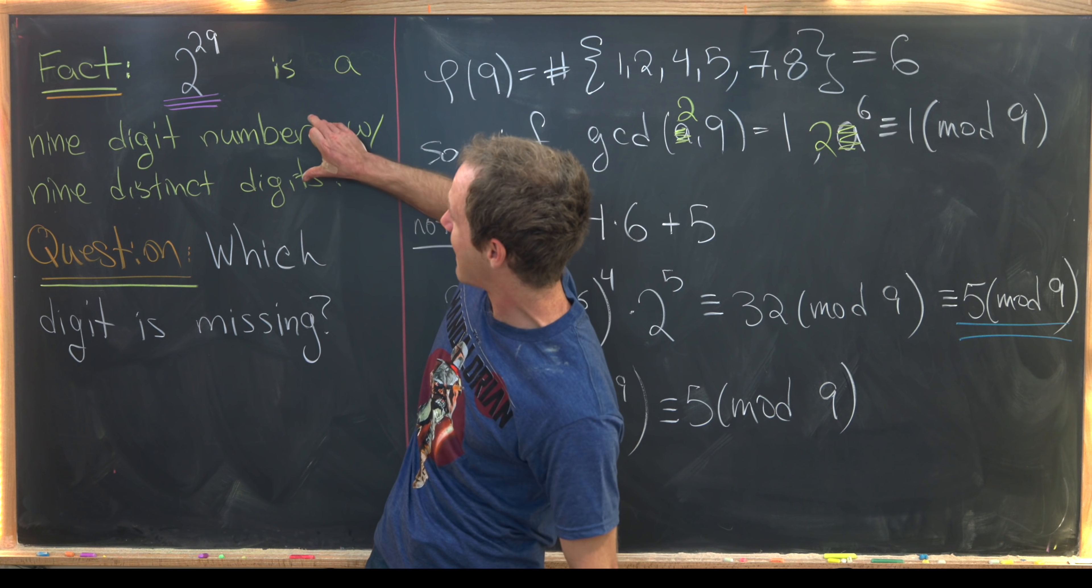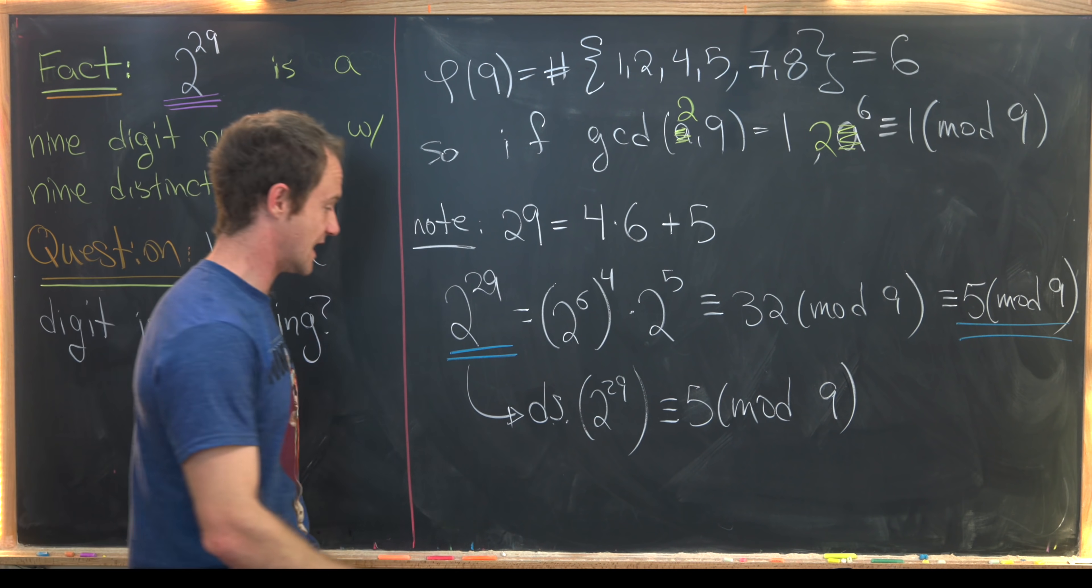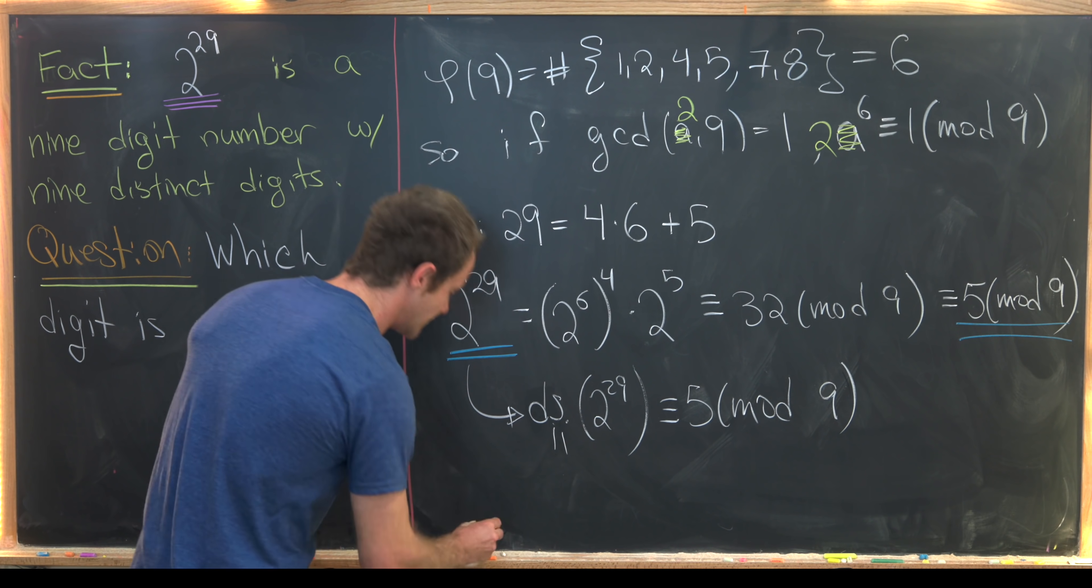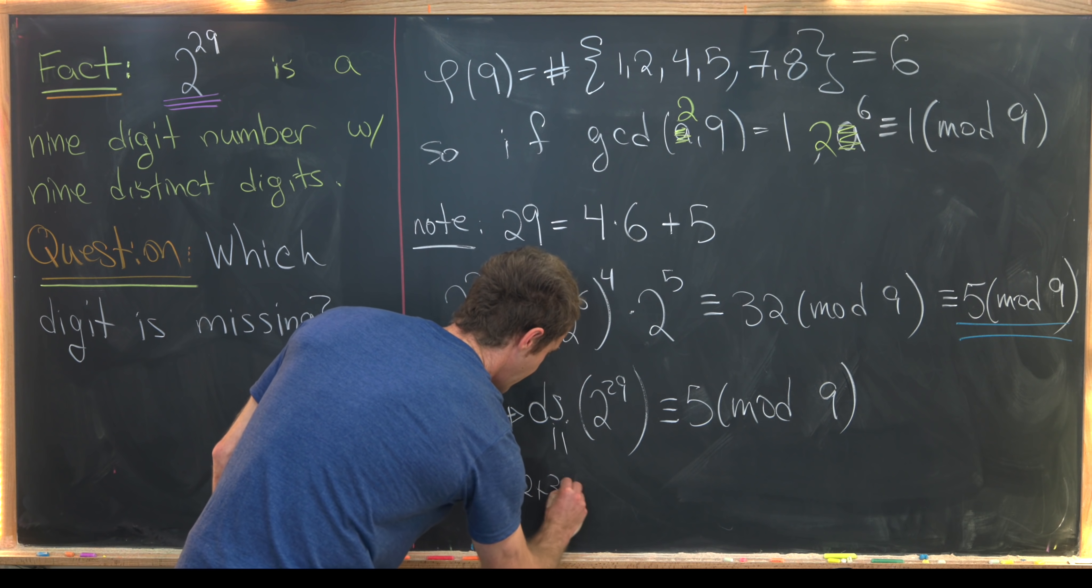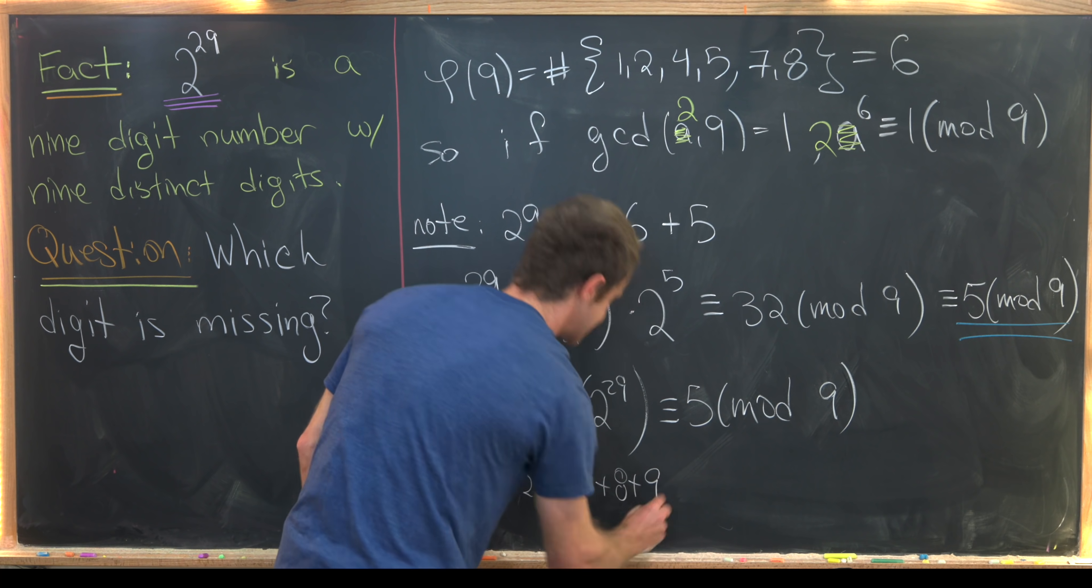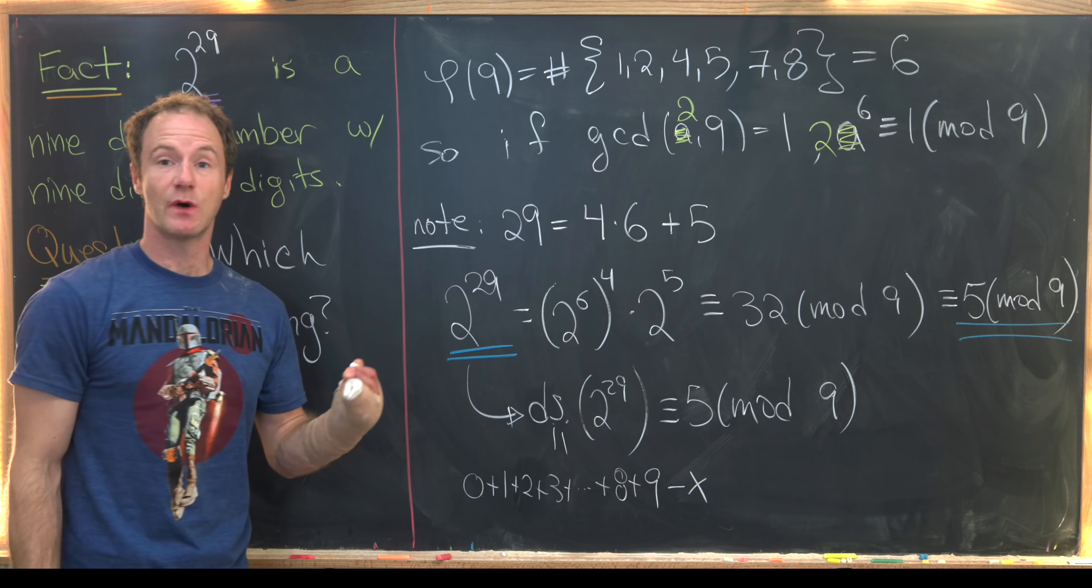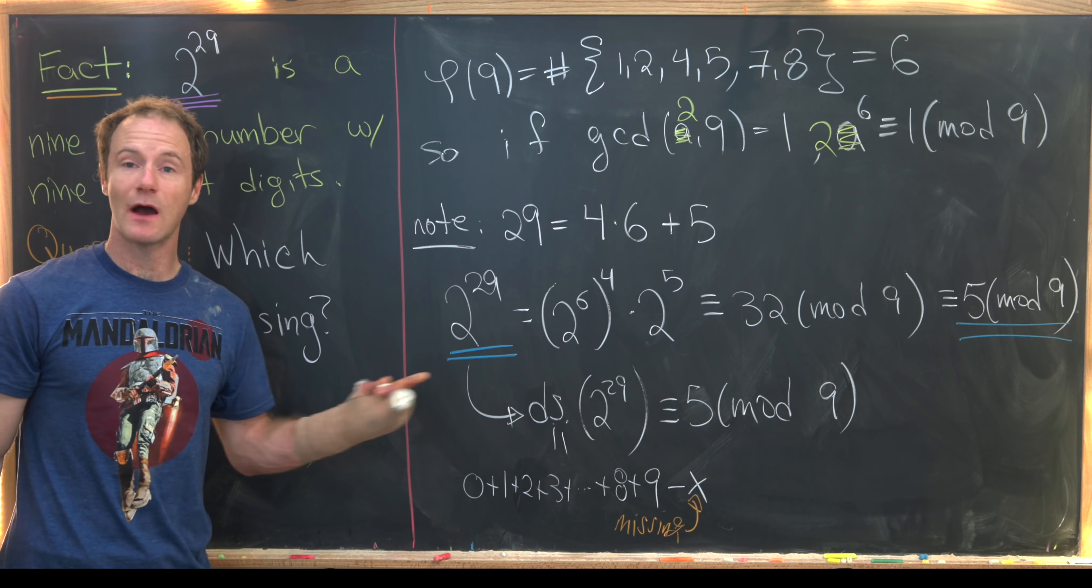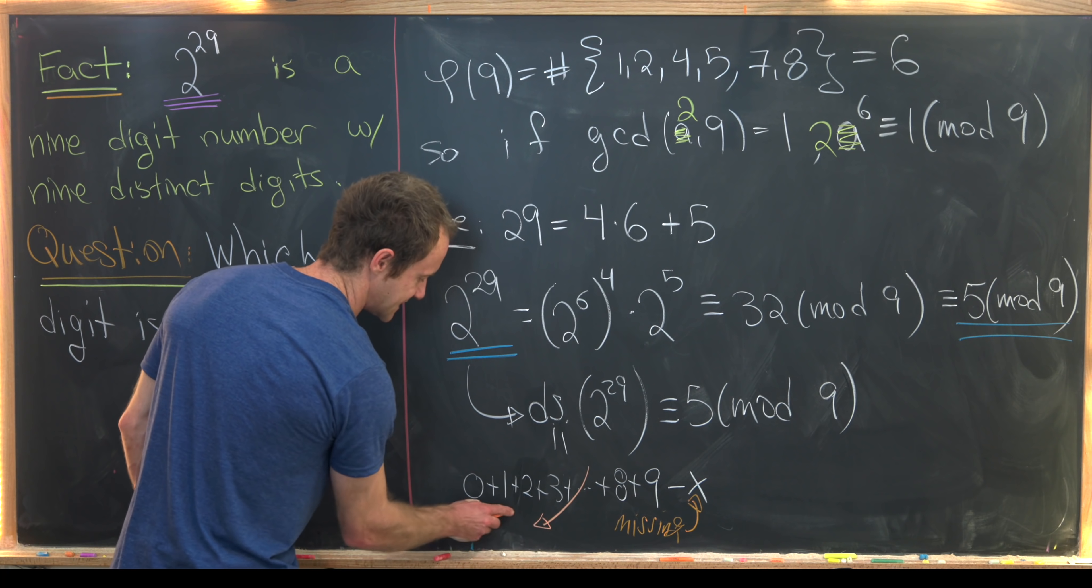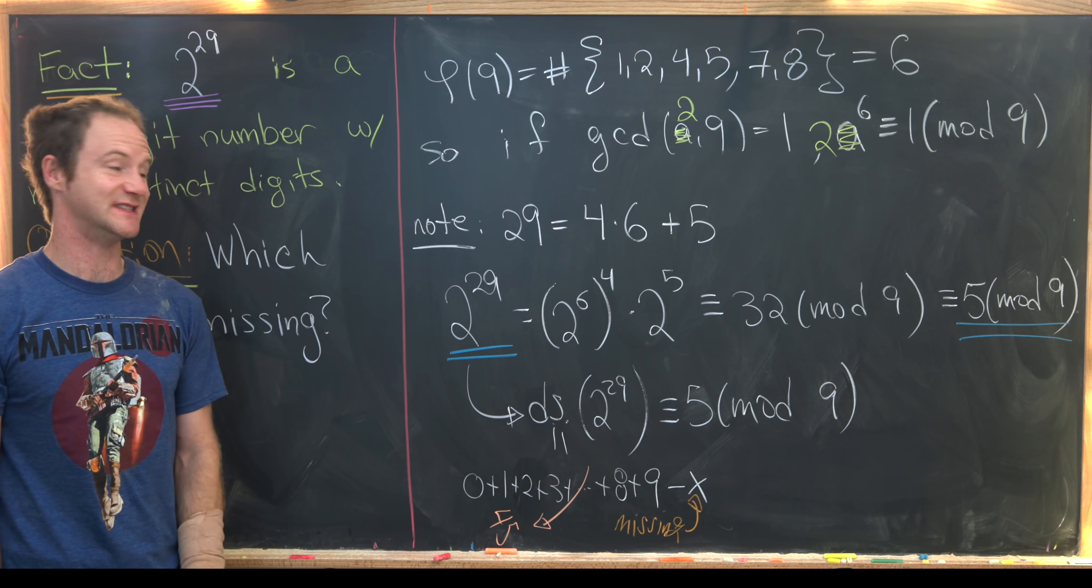But now if we look over here at our problem, notice that we haven't used the fact that we have nine distinct digits. So let's do that. So notice that this digit sum will also be equal to zero plus one plus two plus three plus all the way up to plus eight plus nine minus whichever one's missing. So I'll call whichever one that's missing x. So let's just put that here, this is the missing digit. But now we can easily add the numbers one to nine, and notice that they give us 45. But 45 is congruent to zero mod nine because it's a multiple of nine.